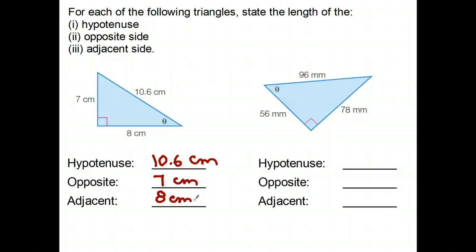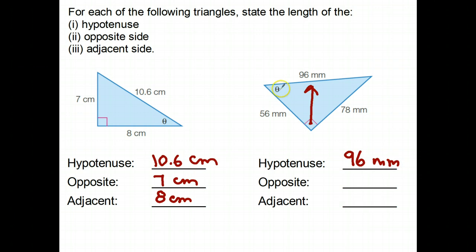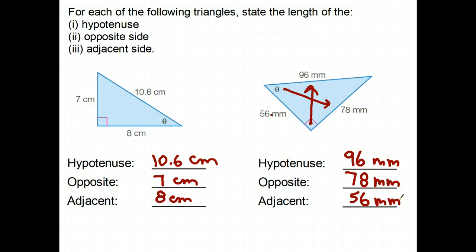Let's see how you went. Starting with the angle down here, the hypotenuse in this case has a length of 96 millimeters. The side opposite the angle — I can draw an arrow to it — is 78 millimeters. And finally, the side next to the angle, since the hypotenuse is up there, has to be the other side, which is 56 millimeters. It's very important that you can quickly and accurately identify hypotenuse, opposite, and adjacent. If you can't do that, you're going to have a lot of trouble working with trigonometry.